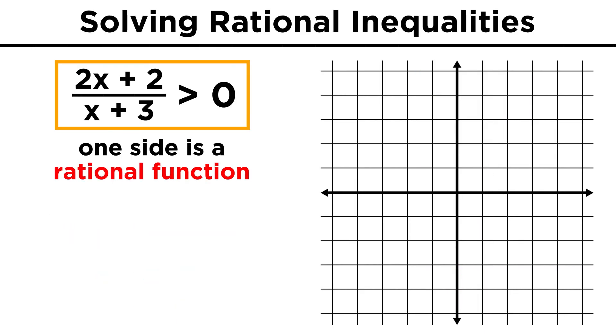Now let's look at rational inequalities. As we could probably guess after learning how to graph rational functions, these are just inequalities where one side is a rational function. Take something like two x plus two over x plus three is greater than zero.